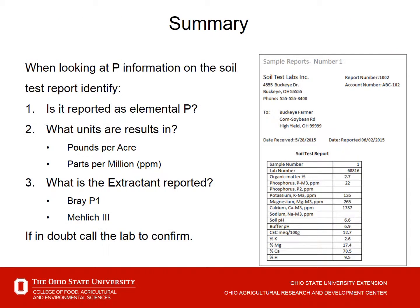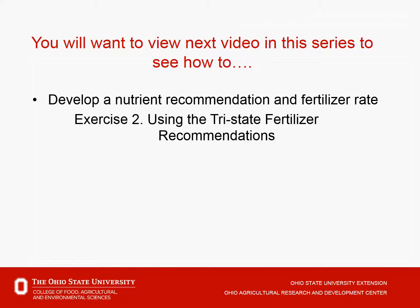In summary, we want to take a close look at the phosphorus soil test report: confirm elemental phosphorus is represented, know the units (pounds per acre or parts per million), and know the extractant — whether Bray P1 or Mehlich 3 — so we get into and use the right recommendations. If there's any doubt, if someone left off the extractant information, call the lab and confirm before moving forward with a recommendation. I invite you to join me in the next video to talk about how to use this soil test result to come up with a nutrient recommendation and finally a fertilizer recommendation.